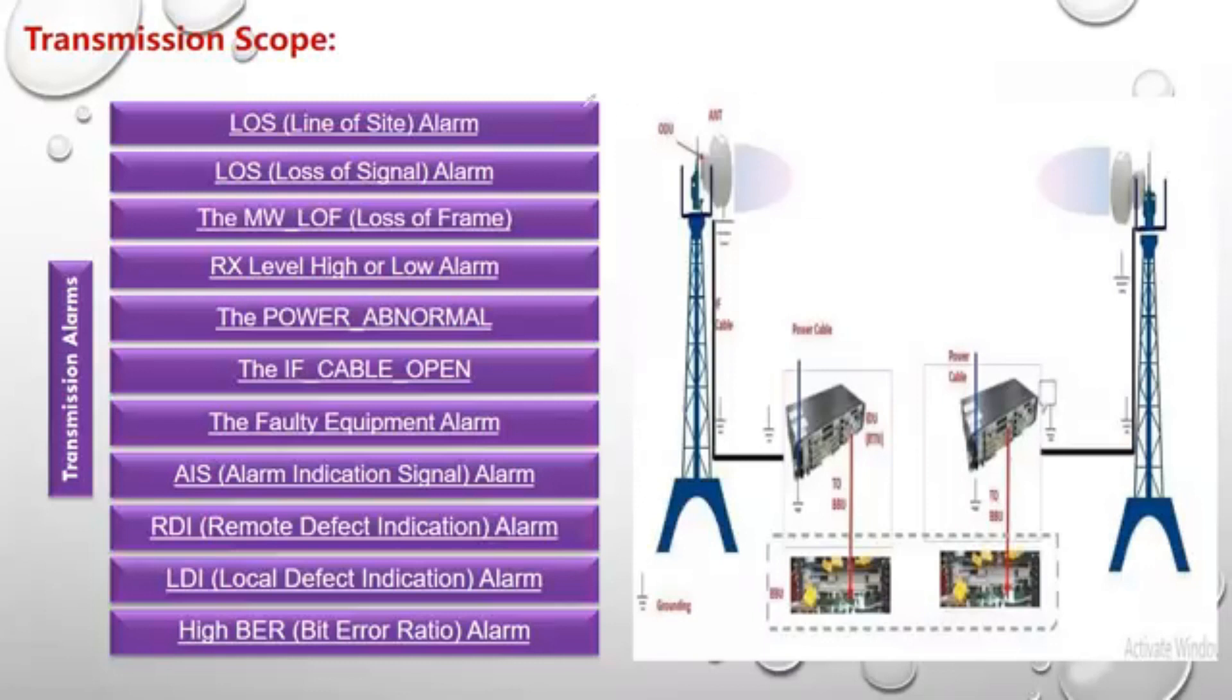Now the second thing is that these alarms are collected on something that we call the alarm log. It's like a sheet that we download or we get when we access through the alarm log. Again, it's the alarms that are collected in the indoor unit of the microwave.